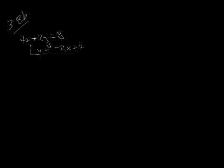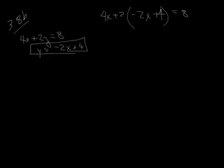Alright, well they told us what our y is here, so that's saving us a step. So I can put 4x plus 2, and I'm going to put negative 2x plus 4 in for y, and that equals 8, so I substitute it.